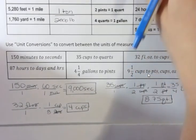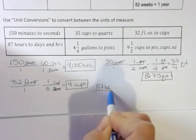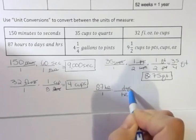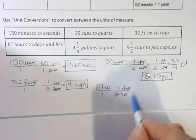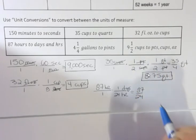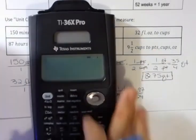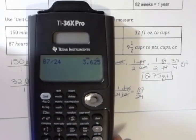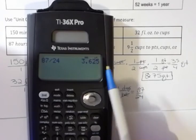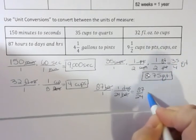The next problem converts 87 hours to days and hours. I start with 87 hours over 1, put hours on the bottom and days on top, knowing there are 24 hours in a day. So I divide 87 by 24. Be careful — you'll get a decimal: 87 divided by 24 is 3.625. That tells me there are three whole days and some hours left over.